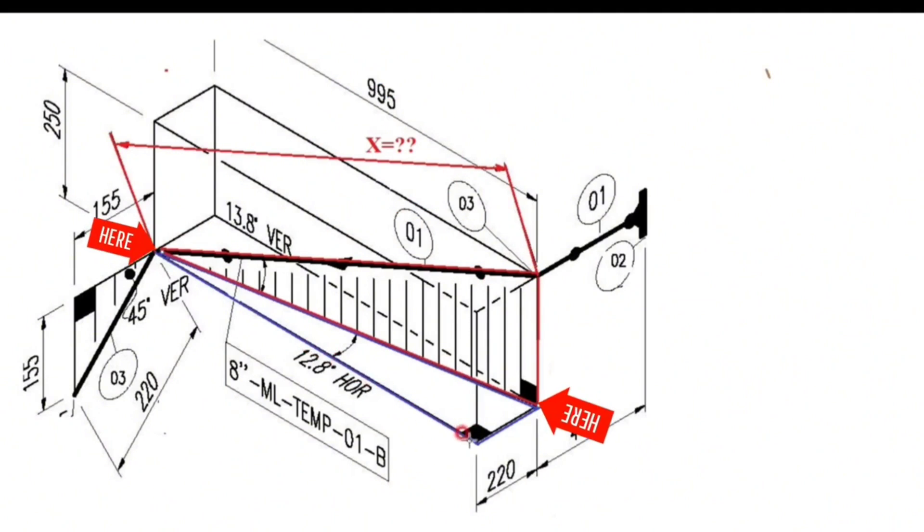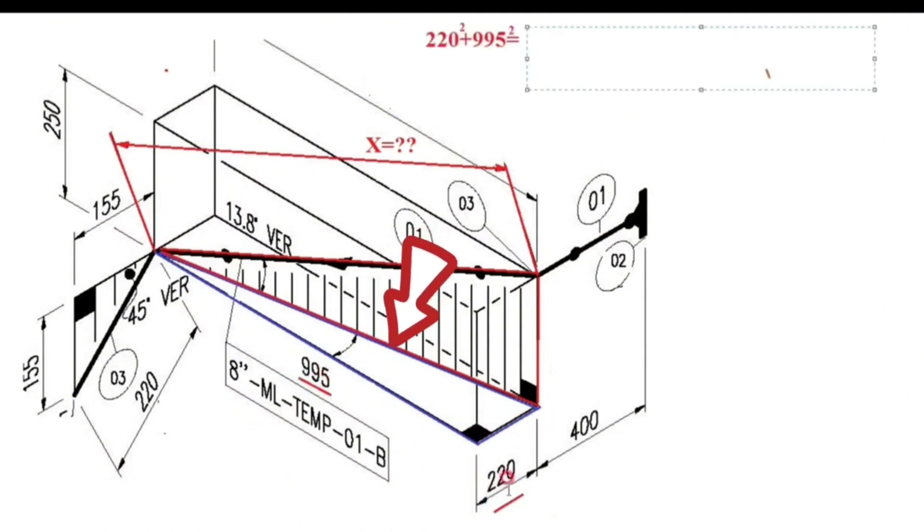Let's first find the hypotenuse of the triangle. This side of the blue triangle is equal to this side of the parallelepiped. The length of the side of the parallelepiped is 995. Then the base of the blue triangle will also be 995. Using the Pythagorean theorem, add the square of 220 to the square of 995 to find the length of the hypotenuse of the blue triangle.